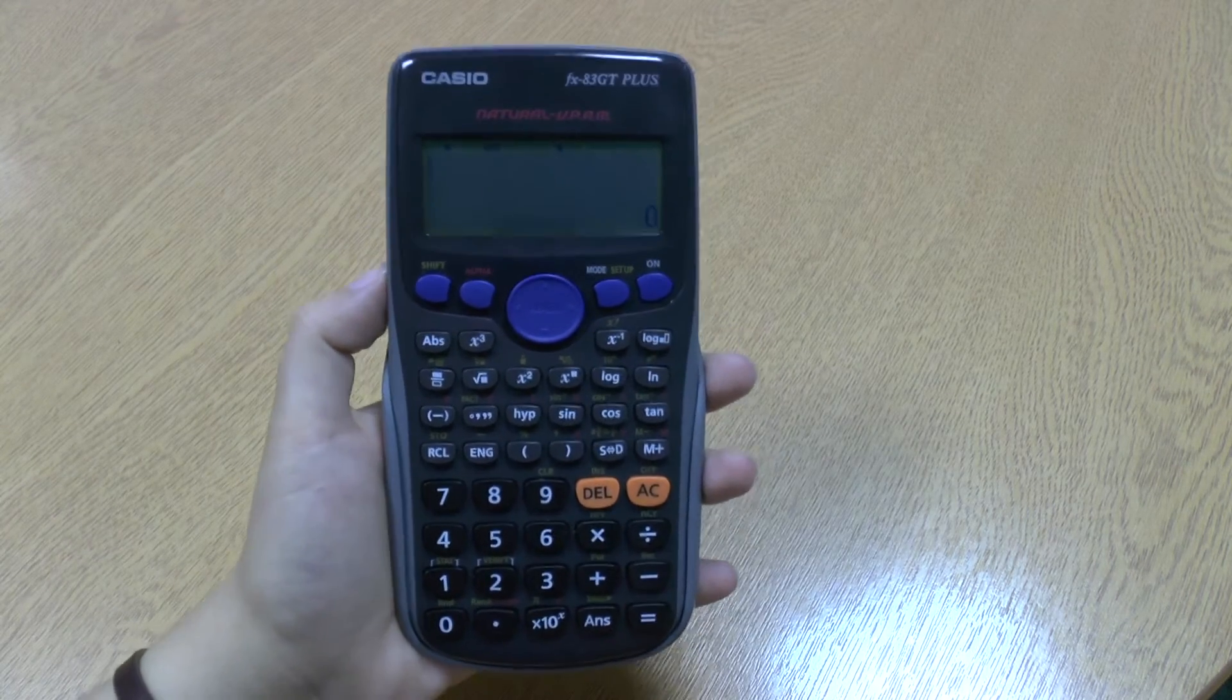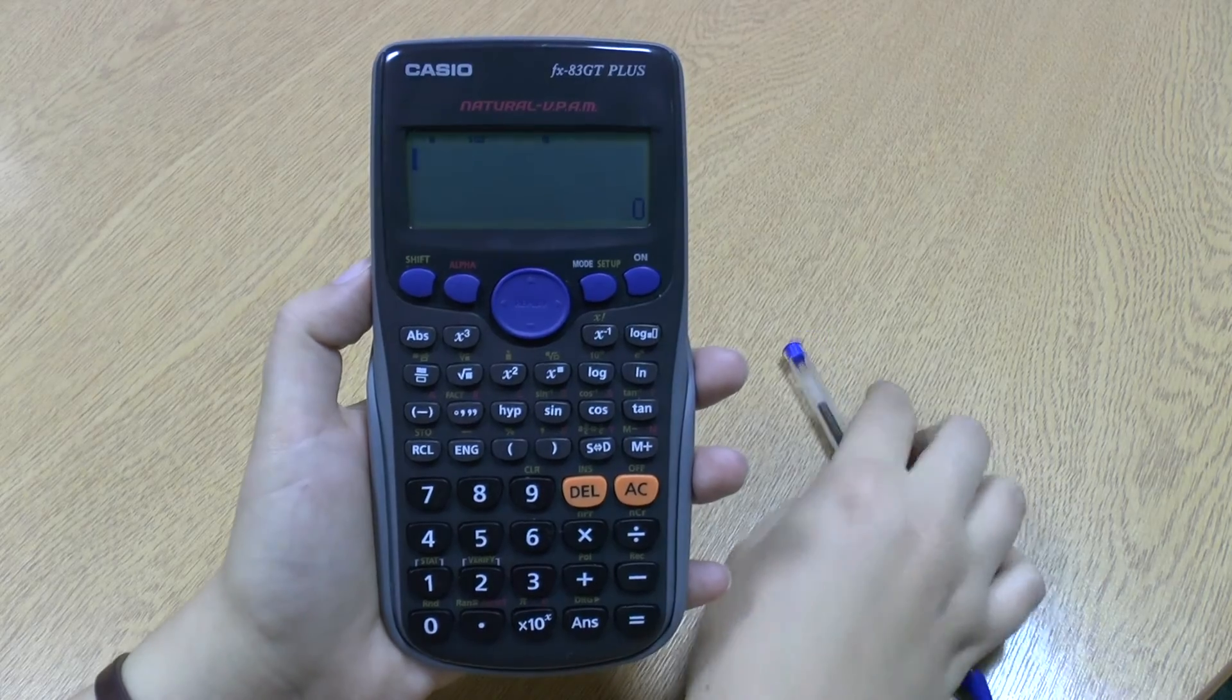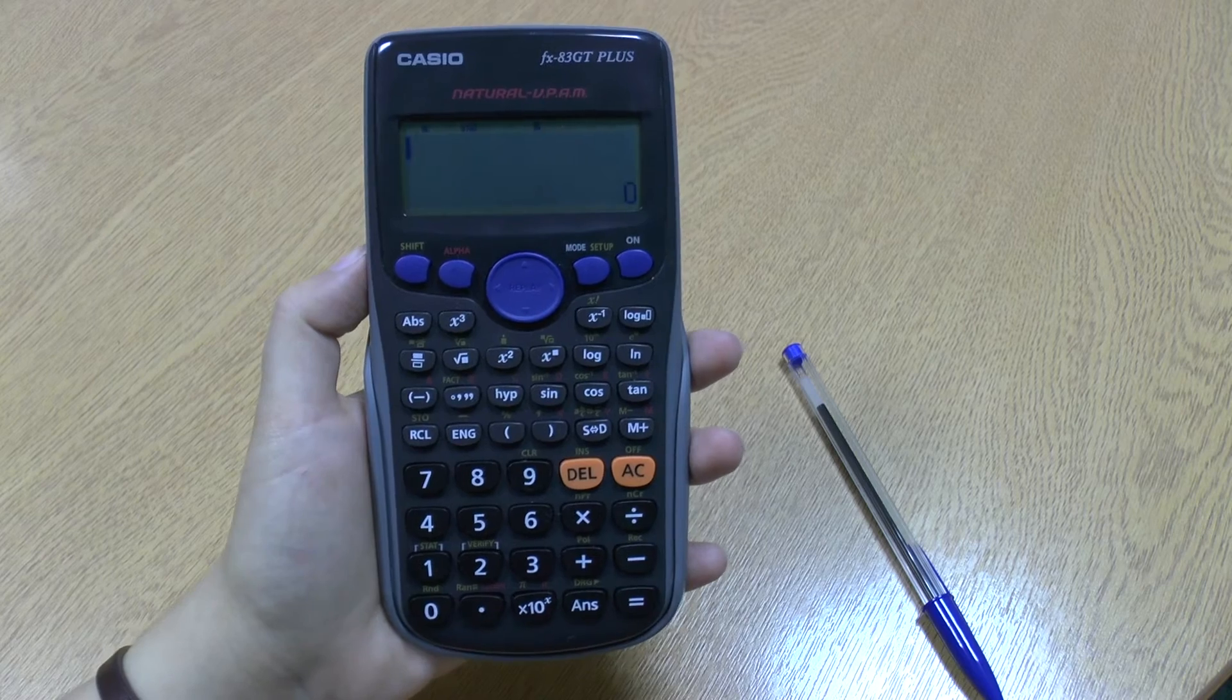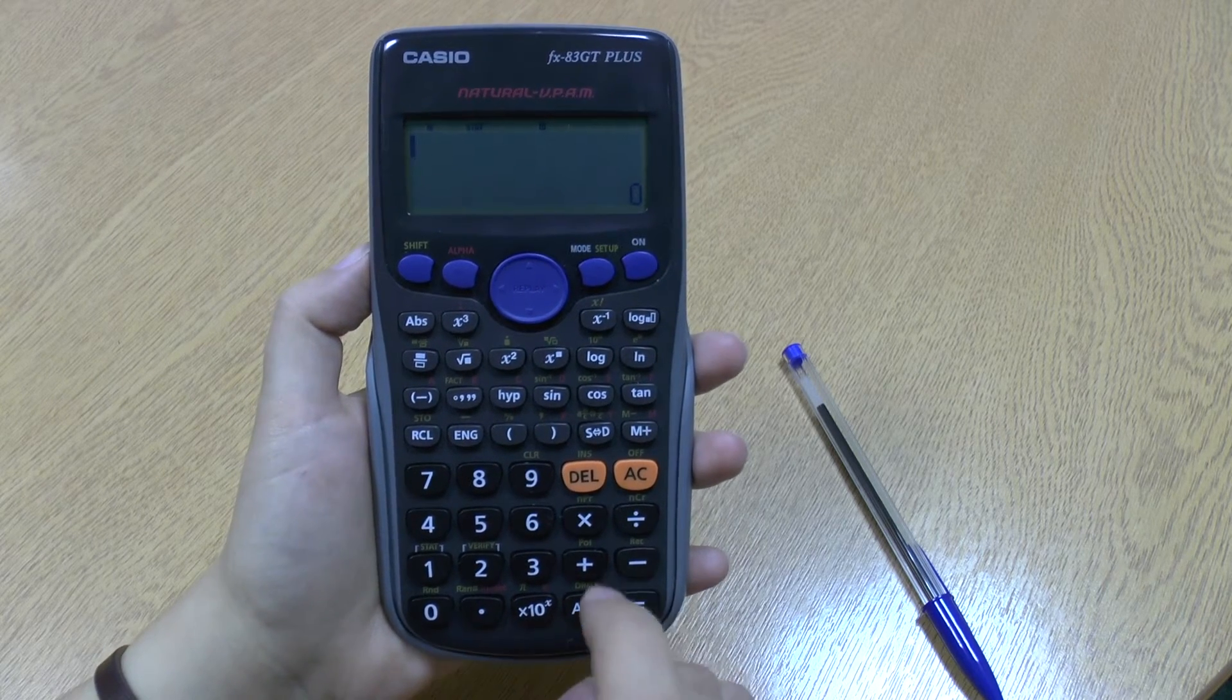So we use it in the same way as we do the x squared. So if I want to do, for example, 6 to the power 3, so 6 cubed, I can do it using that button.